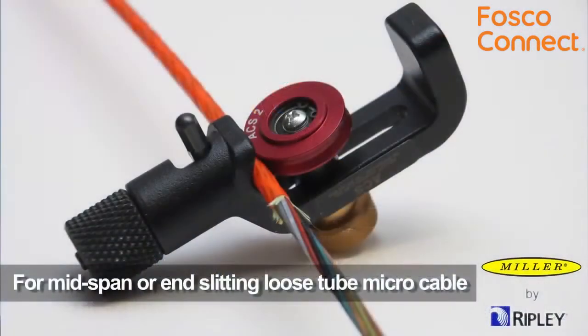The ACS2 cable slitter can also be used for mid-span or end slitting of the thin jackets on loose tube micro cable, typically used in blown fiber applications.